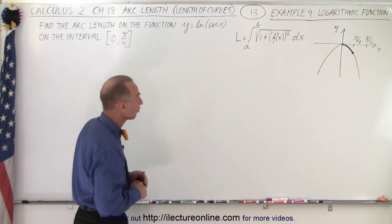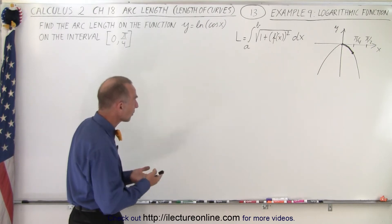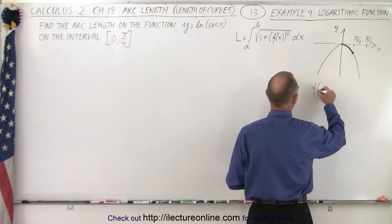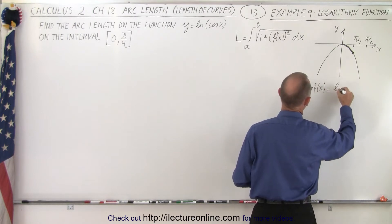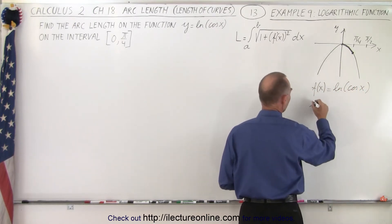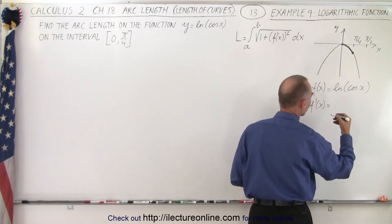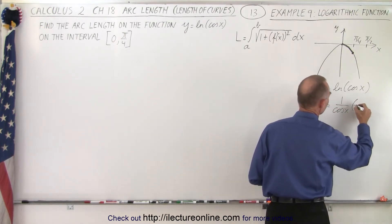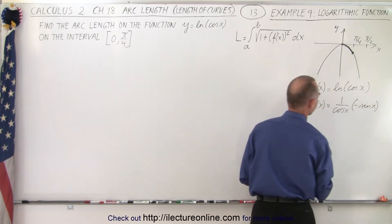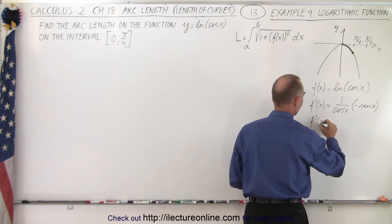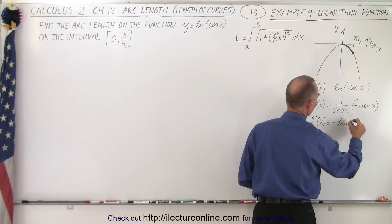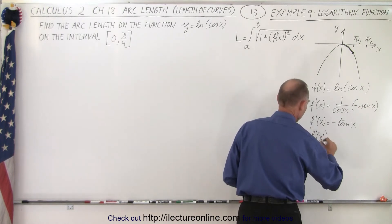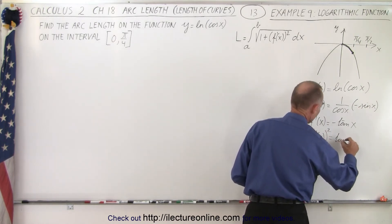We have the general formula to find the arc length, so what we need to do now is find the derivative and the square of the derivative of the function. f of x is equal to the natural log of the cosine of x, so the derivative f prime of x is going to be 1 over the cosine of x times the derivative of the cosine, which is the negative sine. So we end up with f prime of x equal to the negative tangent of x. When we square that, f prime of x quantity squared is equal to tangent squared of x.